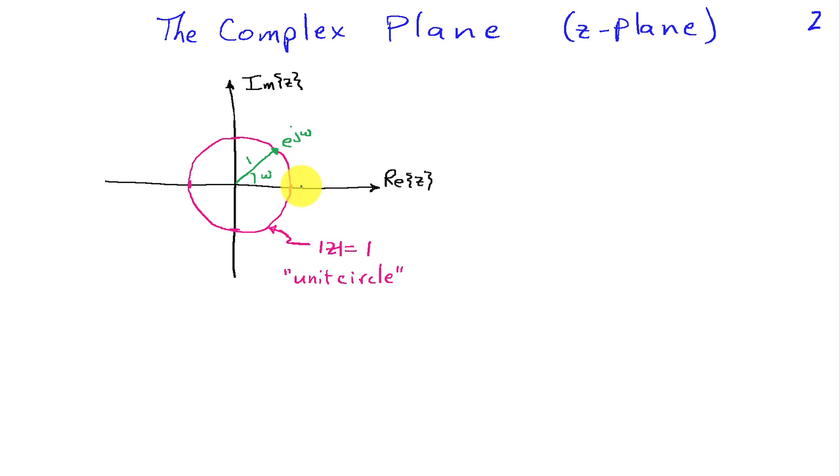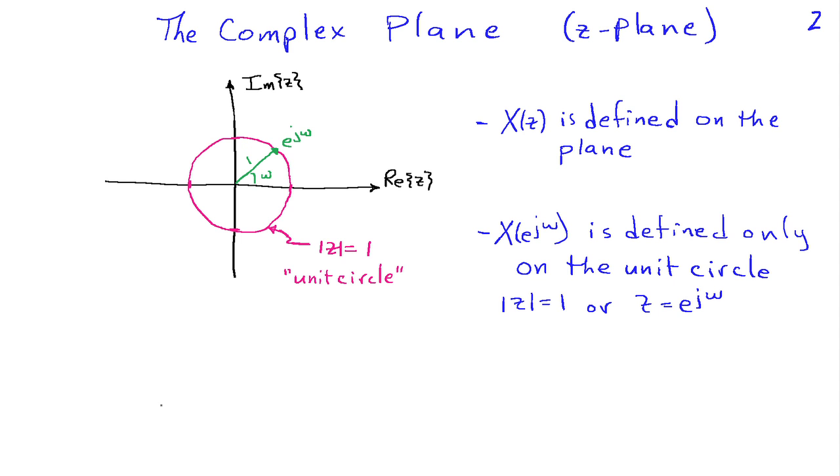The relationship to the Fourier transform was when Z was equal to E to the J omega. Well, E to the J omega is a point that lies on this unit circle. It has angle omega and unit magnitude. So X of Z, our Z-transform, is defined over this plane, whereas the discrete-time Fourier transform, X of E to the J omega, is defined only on this unit circle.